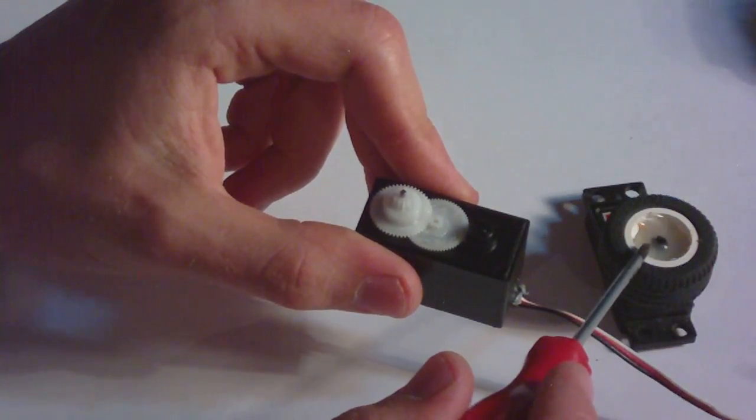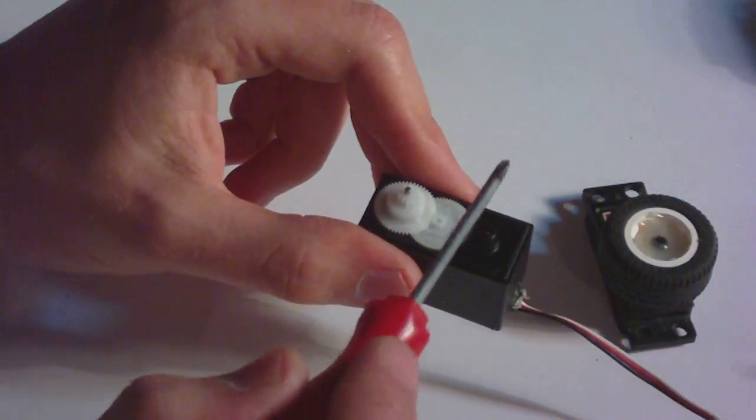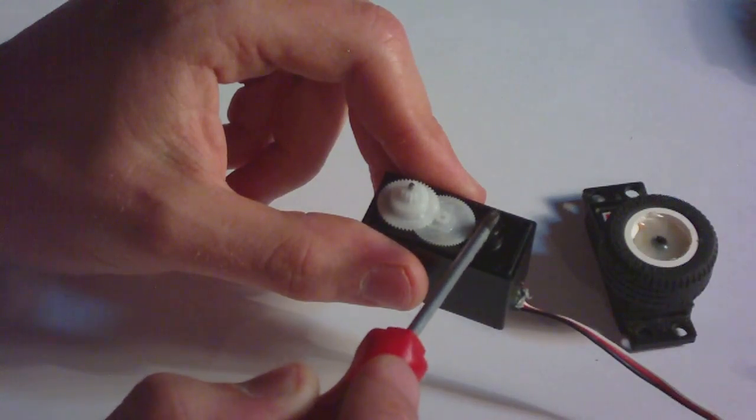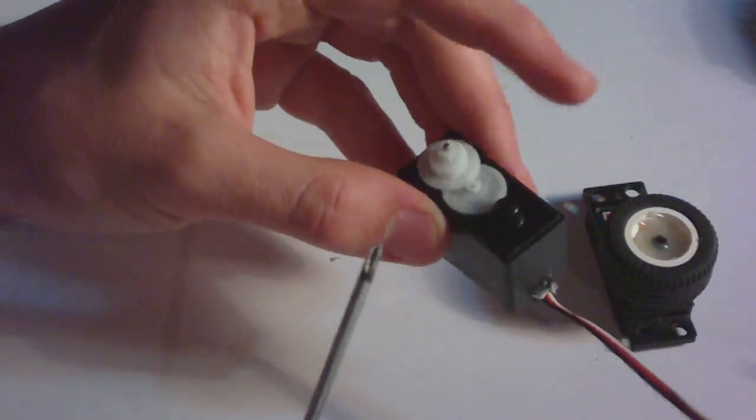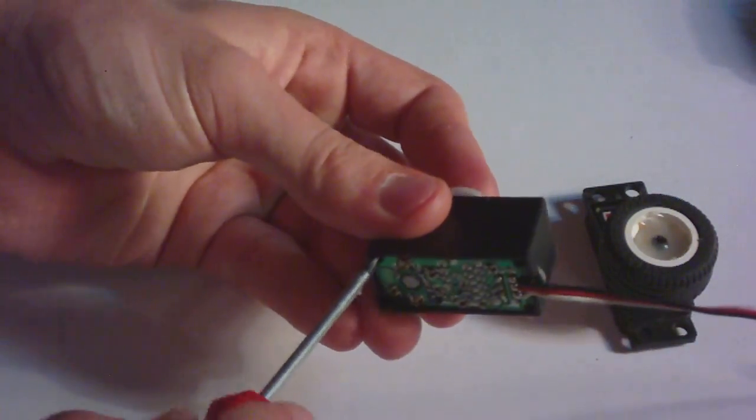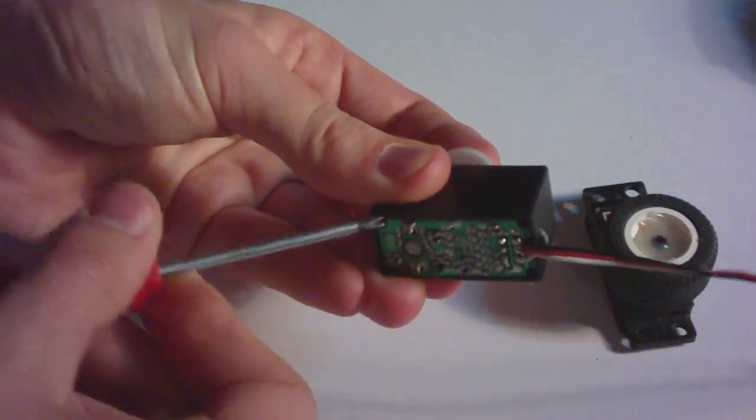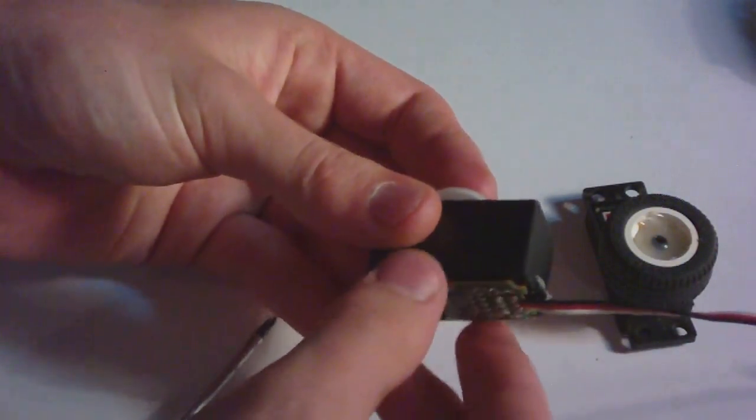What I did is I pushed in the pin of the potentiometer, of the variable resistor. You can see it here. I will take out the control circuit board.